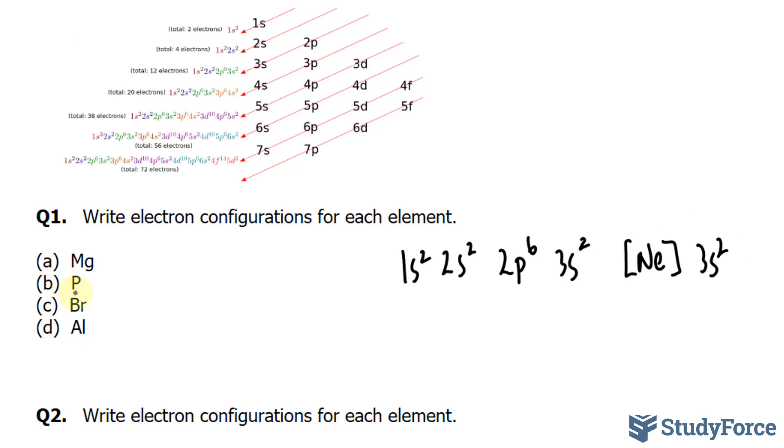So, following these rules, we have 1s², 2 electrons in the first, 2s², 2 electrons here. That's 4. 11 more to go.